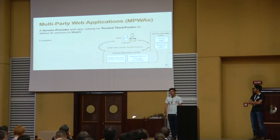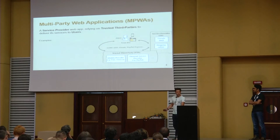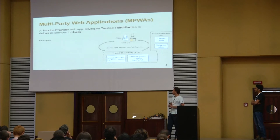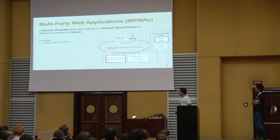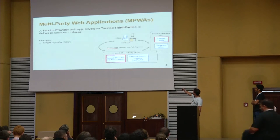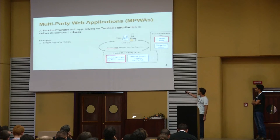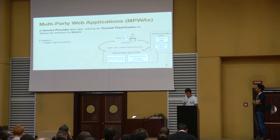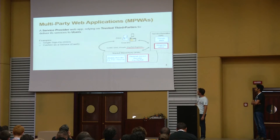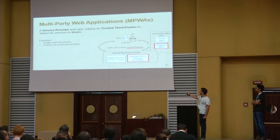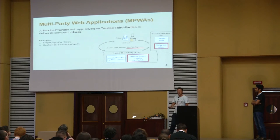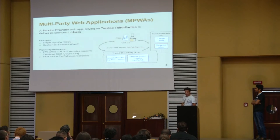So what are multi-party web applications? In this general definition, it is a service provider web application that provides a service to the user, but in doing that, relies on a third party. Here you have a few examples: single sign-on, for instance, where a user that wants to consume a service — here Gmail — is redirected to an identity provider, in this case the University of Genoa identity provider. Another classical example is cashier-as-a-service, where the user wants to buy a product online and to finalize the payment is redirected to a payment service like PayPal. These are things that all of us experience every day and are pretty popular scenarios in nowadays web applications.